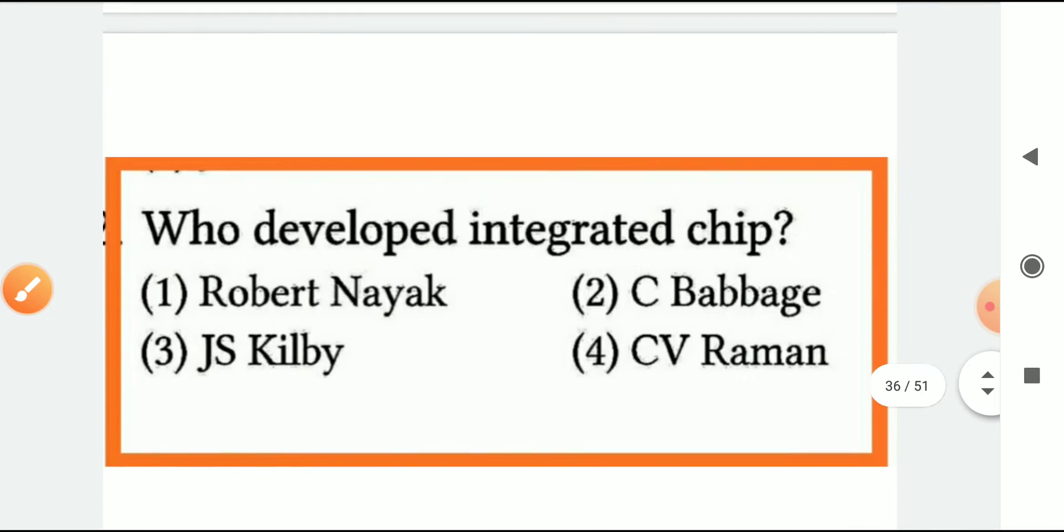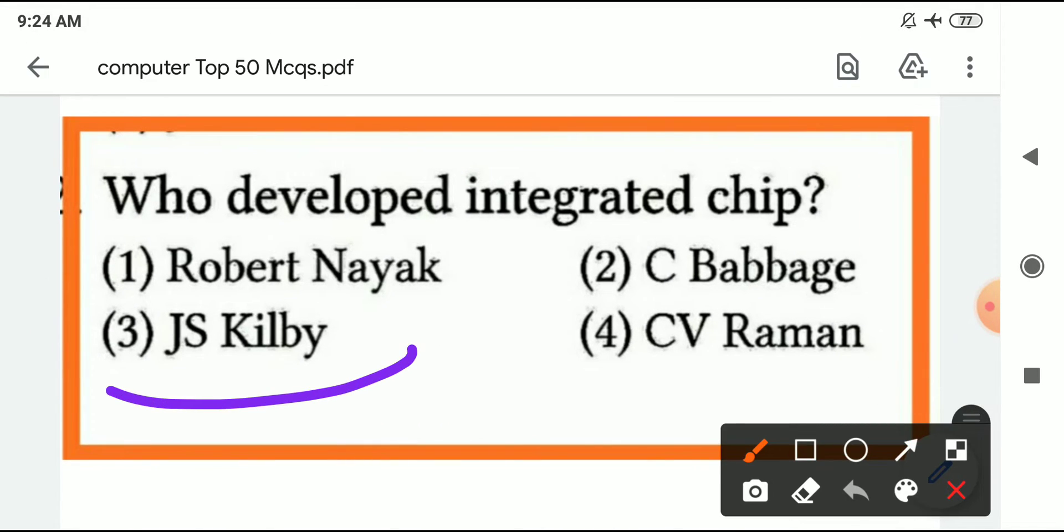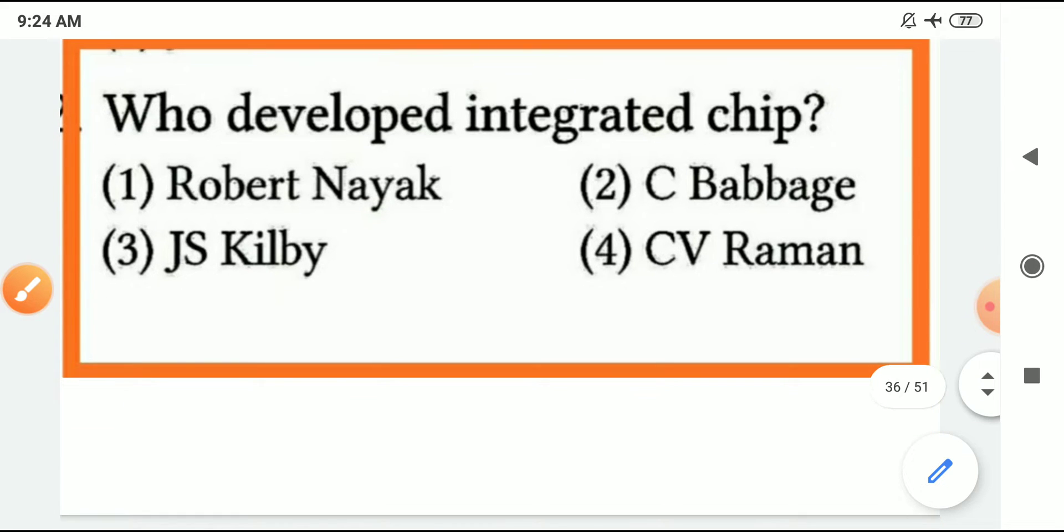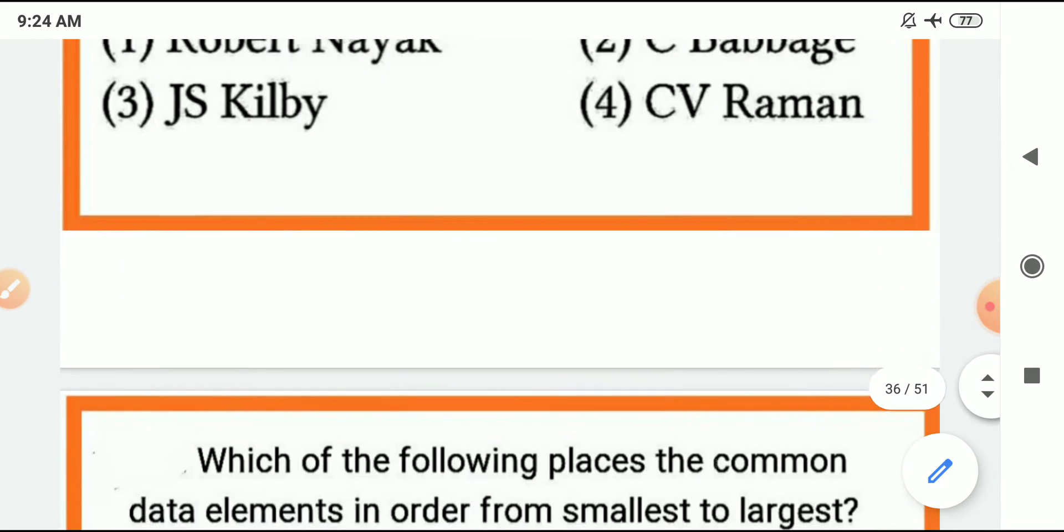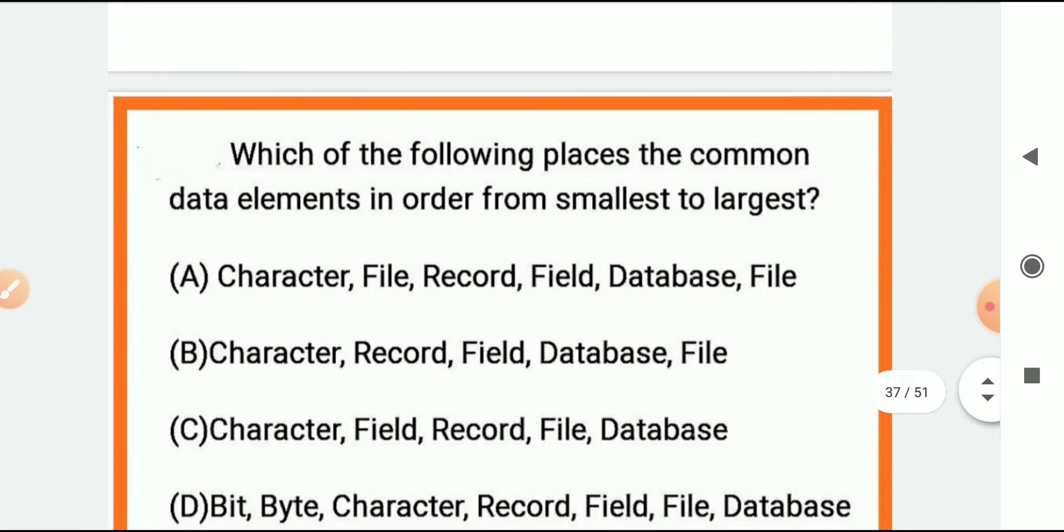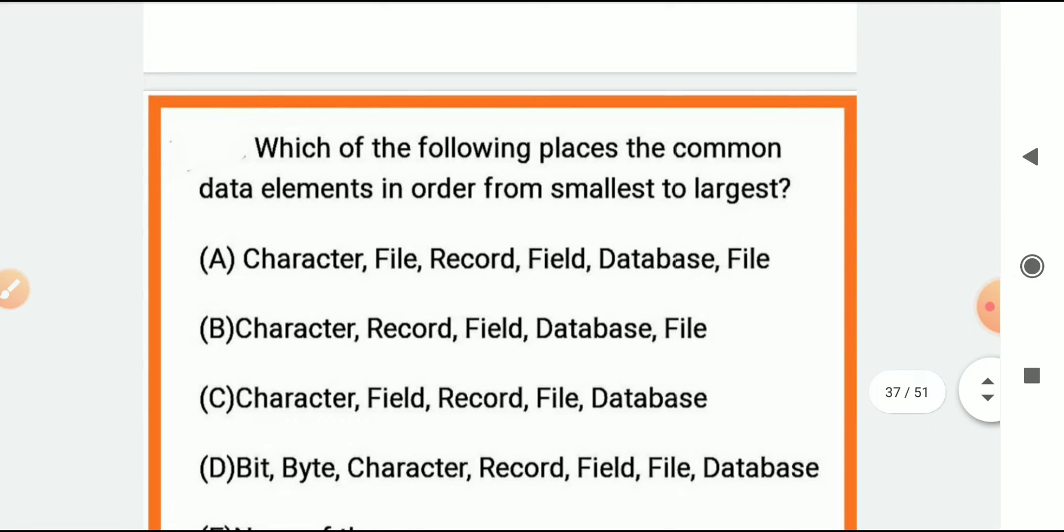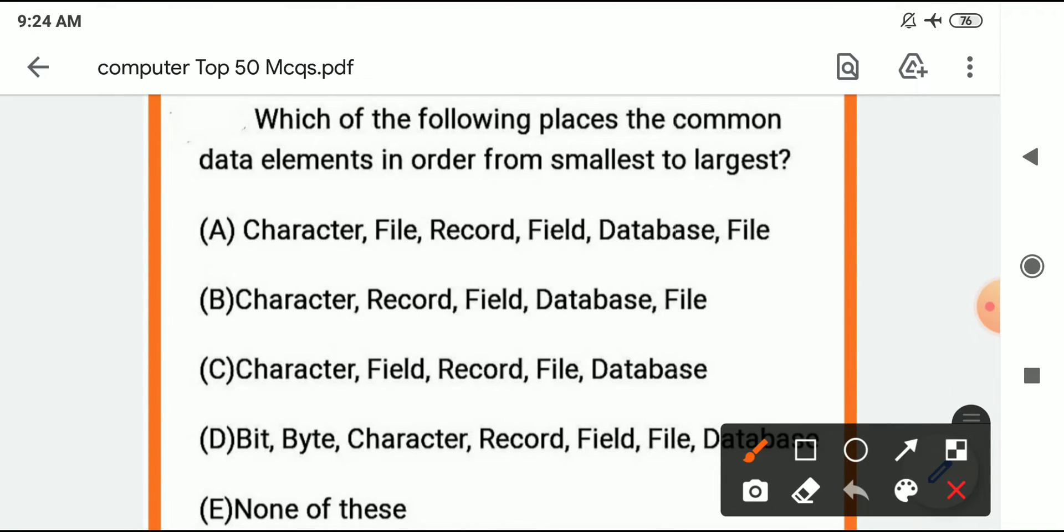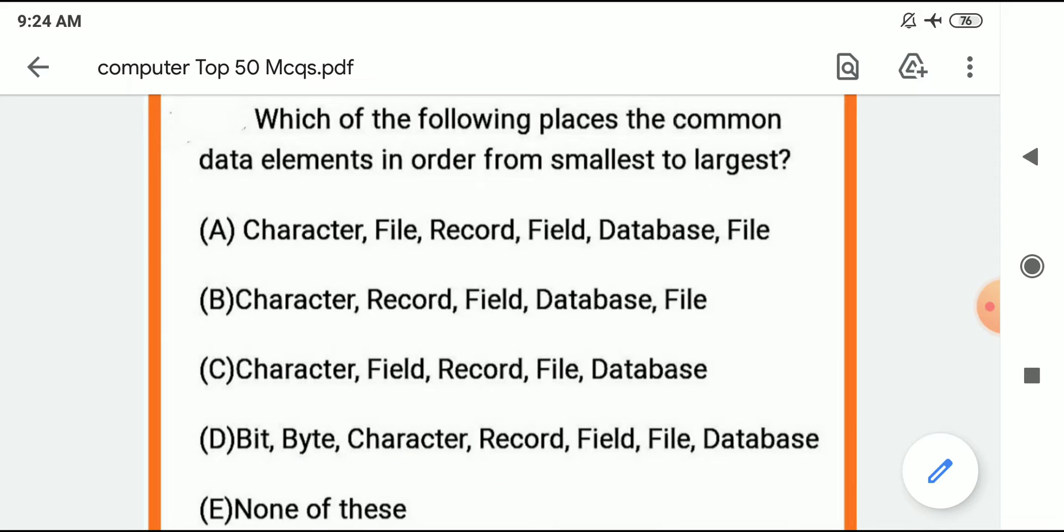Who developed integrated chip IC? Jack Kilby and Noyce developed IC. It was used in third generation. Which of the following places common data elements in order from smallest to largest? The sequence is: bit, then byte, character, record, field, file, database. This sequence is correct. You have to remember this sequence.